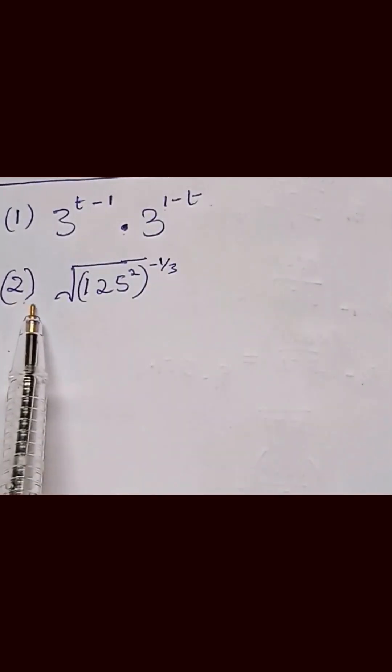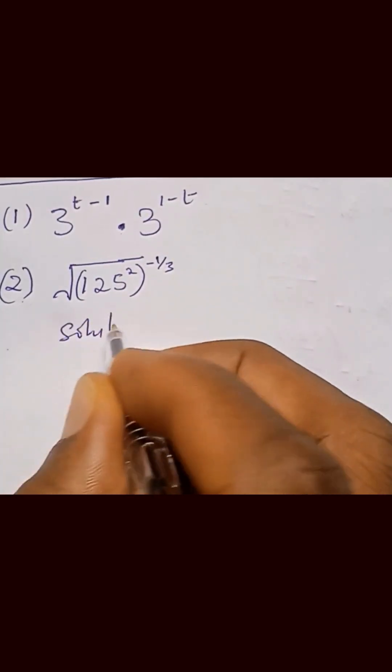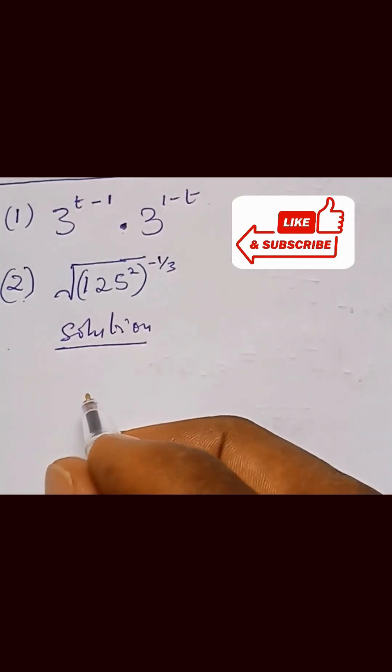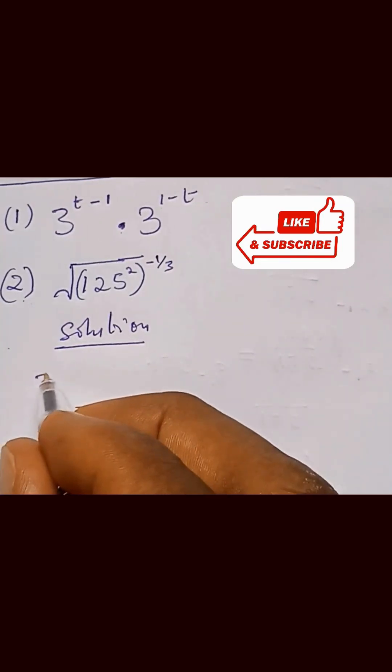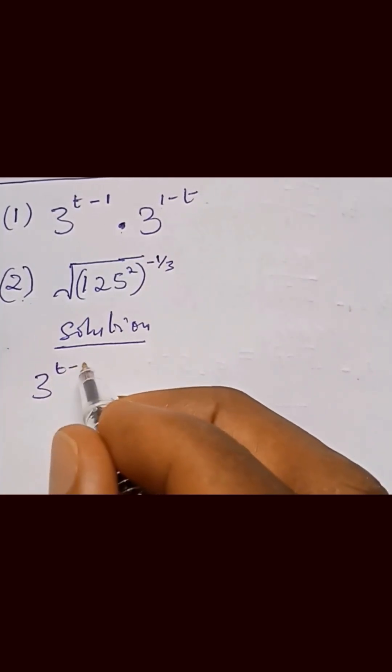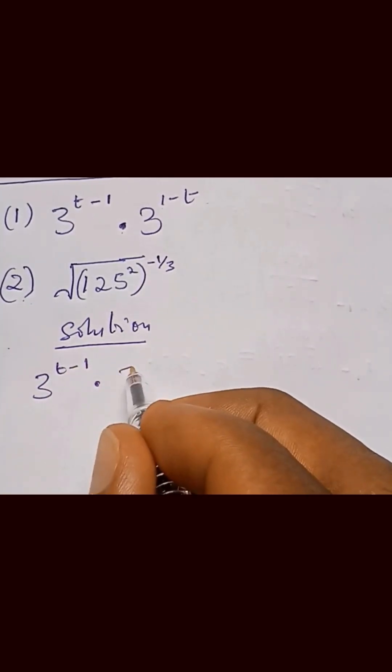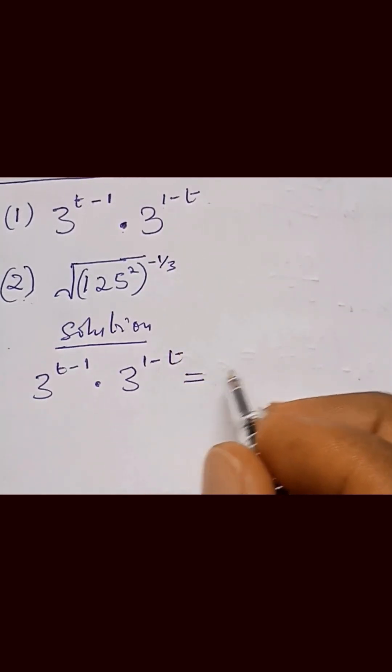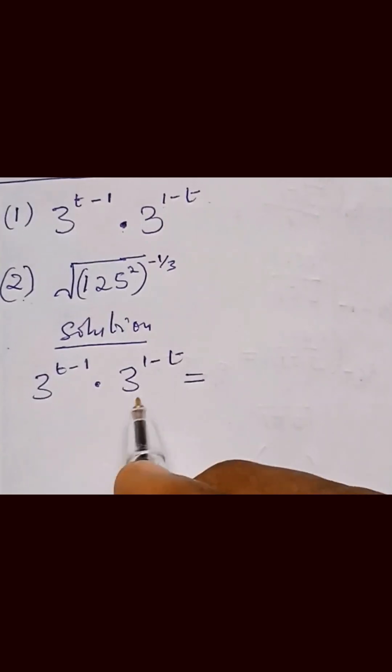So we have 3 raised to the power t minus 1 multiplied by 3 raised to the power 1 minus t. Since we have the same base, we combine and add the exponents.